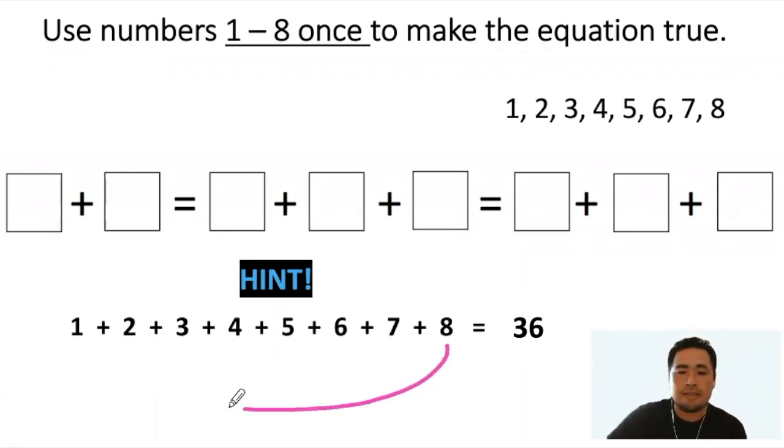What I mean by that is that eight and the two can be grouped together to make a 10. The seven and the three make another 10. Six and the four make another 10. We have a five plus one left.